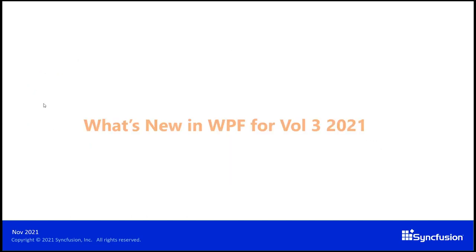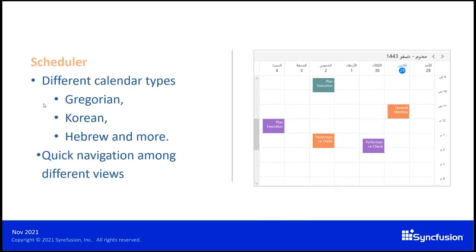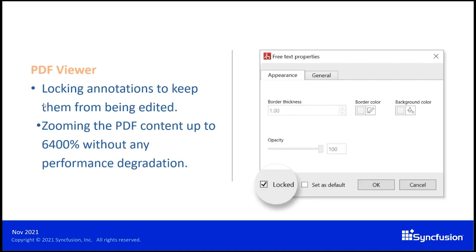Now let's move on to the updates in the WPF platform. Similar to the scheduler in WinUI, the WPF platform scheduler is also improved to support different calendar types such as Gregorian, Korean, Hebrew, and so on. The easy navigation between views is also provided in the header in the WPF platform. For the PDF viewer, you can now lock annotations in the PDF document to avoid editing them. You can now zoom a PDF document up to 6400 percent — previously we supported up to 800 percent only. This feature is provided to easily view documents such as CAD diagrams and construction site plans.